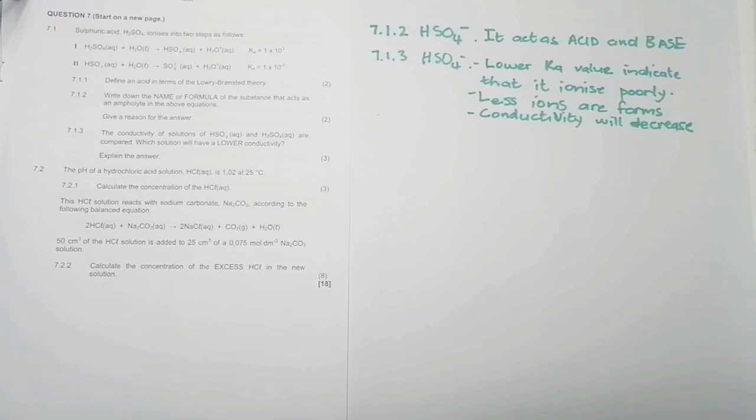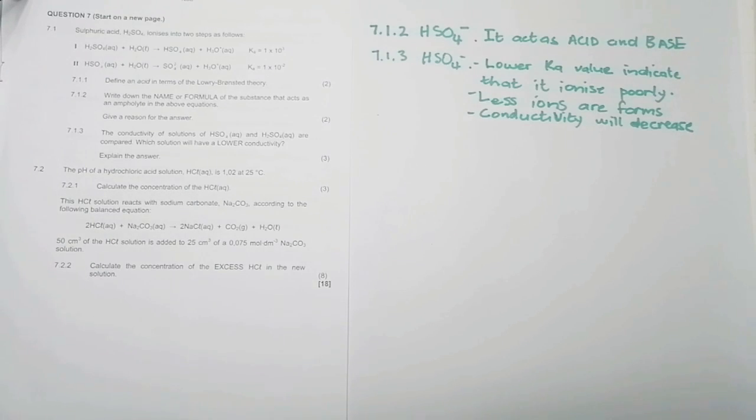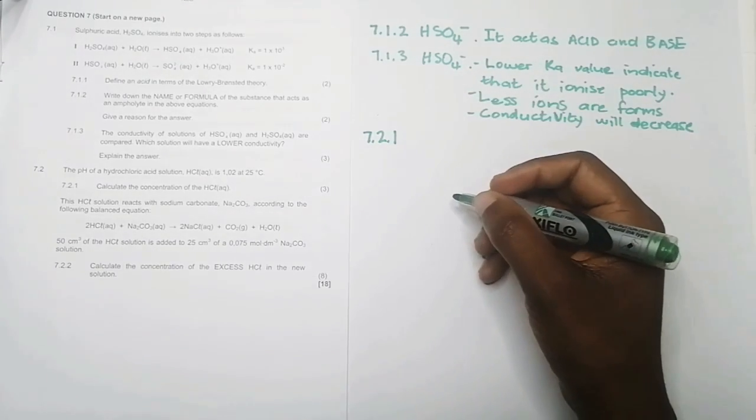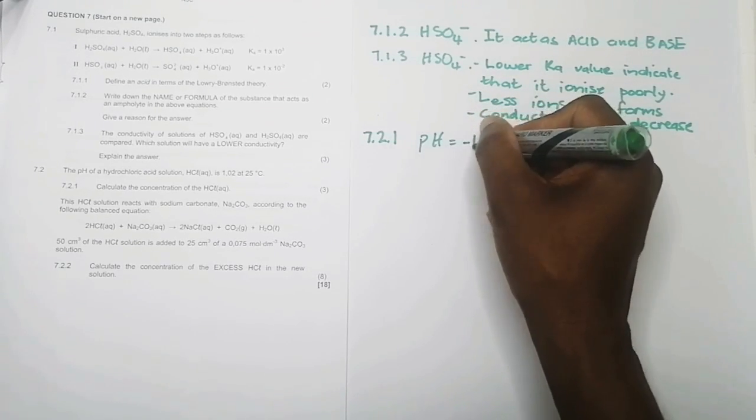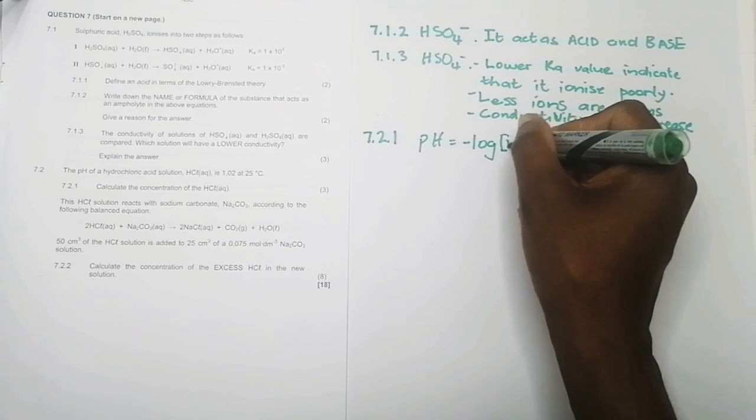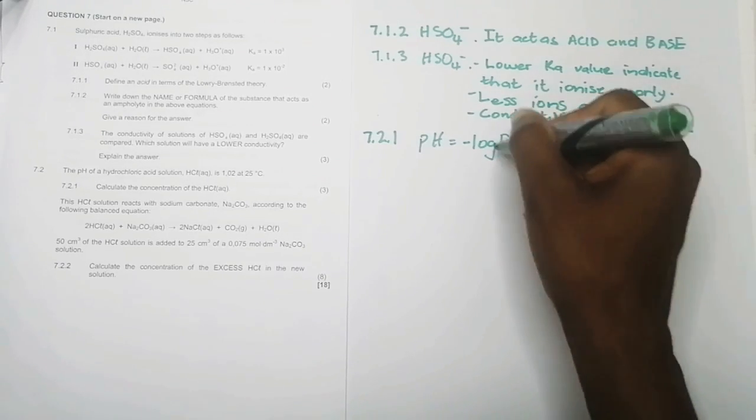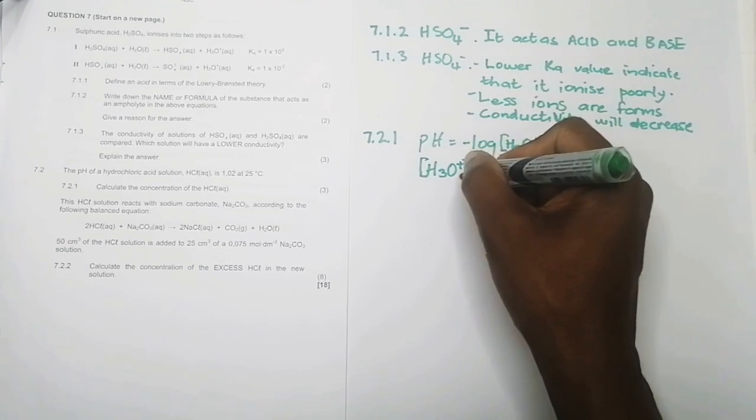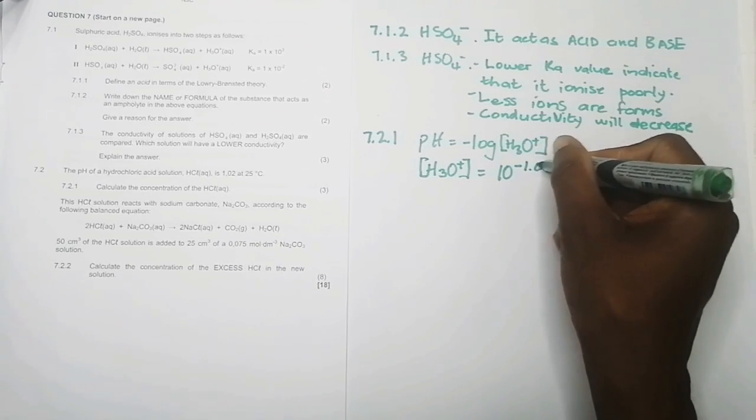So they say the pH of a hydrochloric acid solution, HCl, is 1.02 at 25 degrees. They say calculate the concentration of hydrochloric acid. So we know we've got the pH this time and we're looking for the concentration of hydrochloric acid. But remember, we know that pH is equal to minus the log of our hydronium ions, H3O plus or H plus.